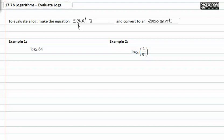In example one, we have log base four of sixty-four is equal to x. Since the base is four, we can write four to the x is equal to sixty-four.